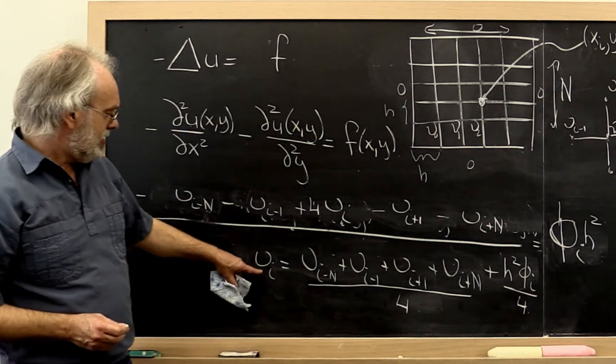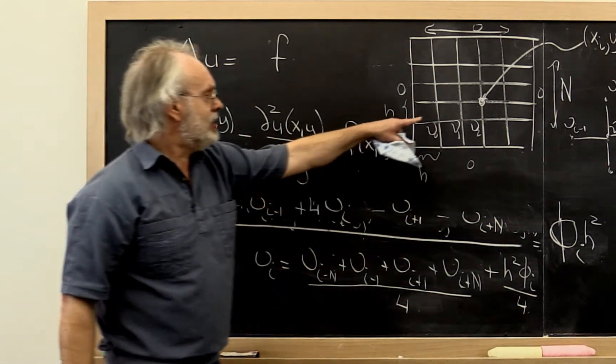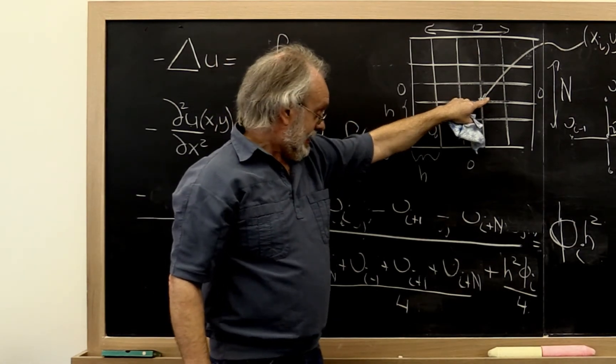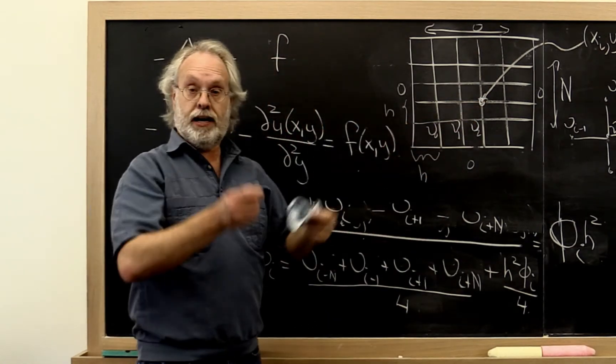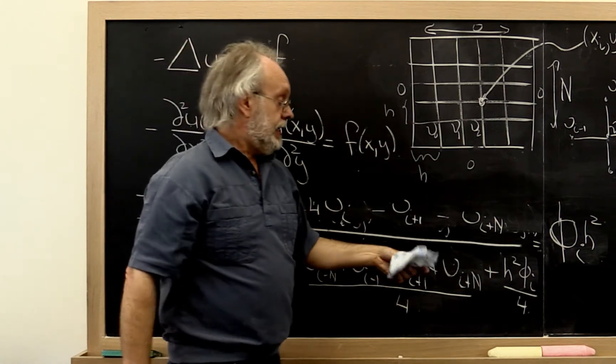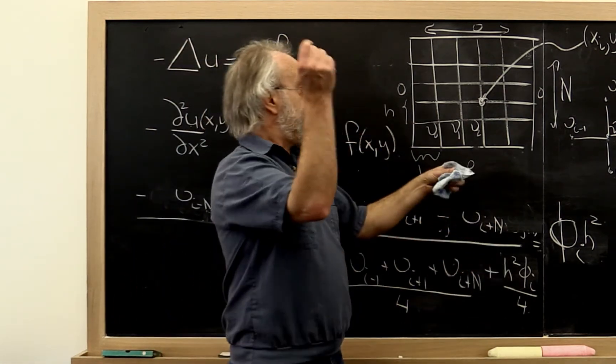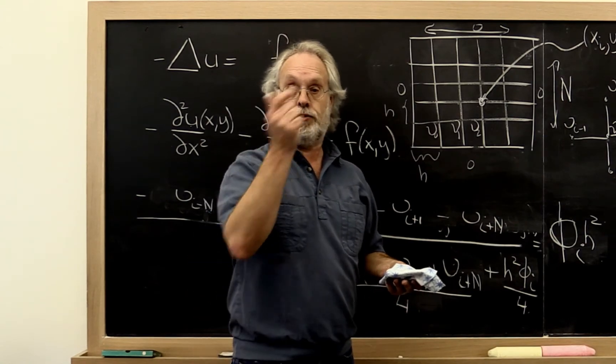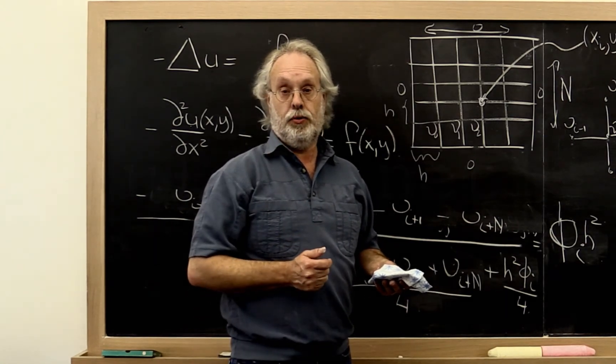And what you notice is that the value at the i-th point, if it wasn't for this load vector, is just the average of the points around it. And then there's a modification for the fact that there is some kind of value that's further contributing to it. There's some kind of load at that point.